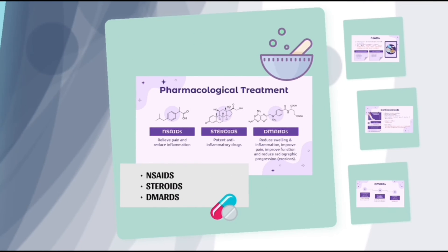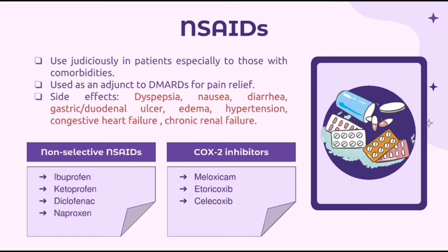There are three main drug classes in pharmacological treatment: NSAIDs, steroids, and DMARDs. All three can be used to reduce swelling and inflammation. NSAIDs should be used judiciously in patients, especially those with comorbidities, due to adverse effects. Side effects include dyspepsia, nausea, diarrhea, gastric or duodenal ulcer, edema, hypertension, congestive heart failure, and chronic renal failure.